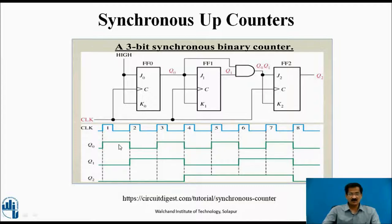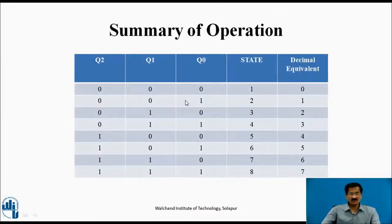Looking at the timing diagram, Q0 output toggles at the leading edge of every clock cycle. Q1 will toggle only when Q0 changes its state from 1 to 0. Q2 output will change when both Q0 and Q1 change their states from 1 to 0. Initially, when the counter is reset, the outputs are 0, 0, 0 (decimal 0). At each clock pulse, the count advances: 001, 010, 011, 100, 101, 110, and finally 111.